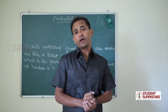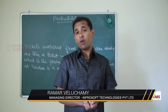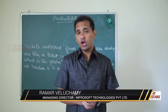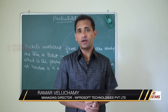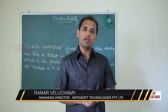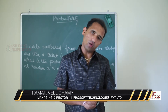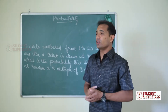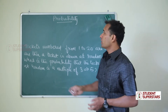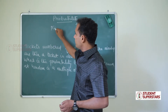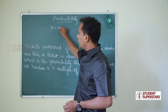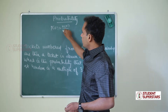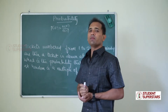Hi guys! In this video, we are going to learn about probability. Probability means possibility — the number of possible occurrences. Probability values rise between 0 and 1. This is an extension of permutation and combination. Probability of events is equal to number of events by number of samples.